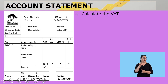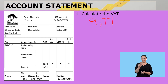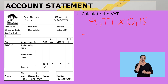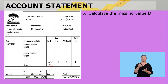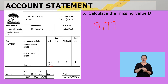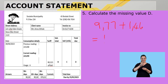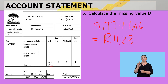Calculate the VAT. Remember VAT is 15%, therefore I owe them R9,77 times 0,15, which equals R1,46. Calculate the missing value D — it's going to be the subtotal R9,77 plus the VAT R1,46, and that gives us R11,23.